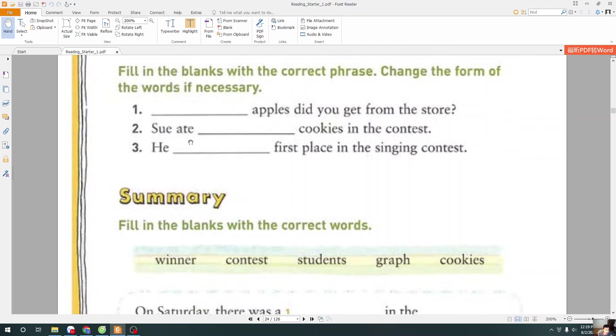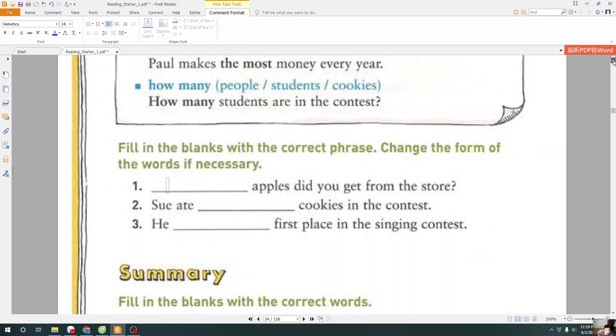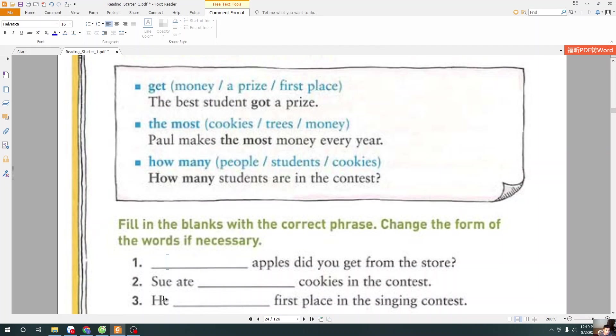And now we will fill in the blanks with the correct phrase. Change the form of the words if necessary. Now we will choose those. And now choose the best word with me. First sentence is a question. And my choice was how many? How many apples did you get from the store?